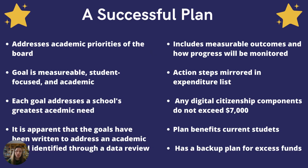To be compliant with rule and law, your plan should do the following. It should address the academic priorities of your board, whether it's a district school board or a charter board. You should include a goal that is measurable, student-focused and centered, and academic in nature. You should have a goal that addresses a school's greatest academic need, with it apparent that goals address an academic need identified through a proper data review with your council. Your plan should also include measurable outcomes, indicate how progress will be monitored throughout the year, and include action steps that link together your goal and your expenditure list. Any digital citizenship components should not exceed $7,000. Your plan should benefit current students at your school, and you should also include a backup plan in case you have excess funds.